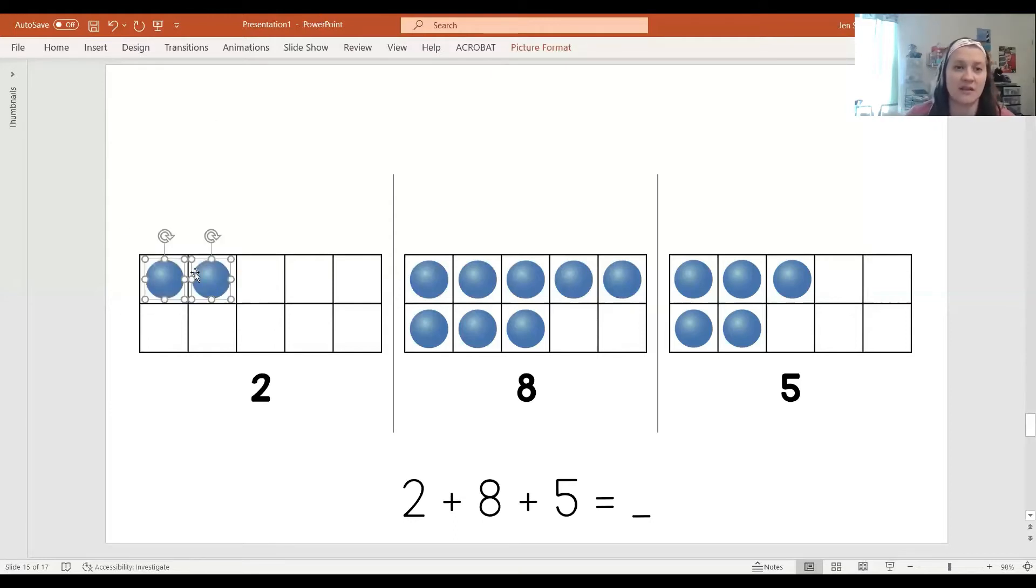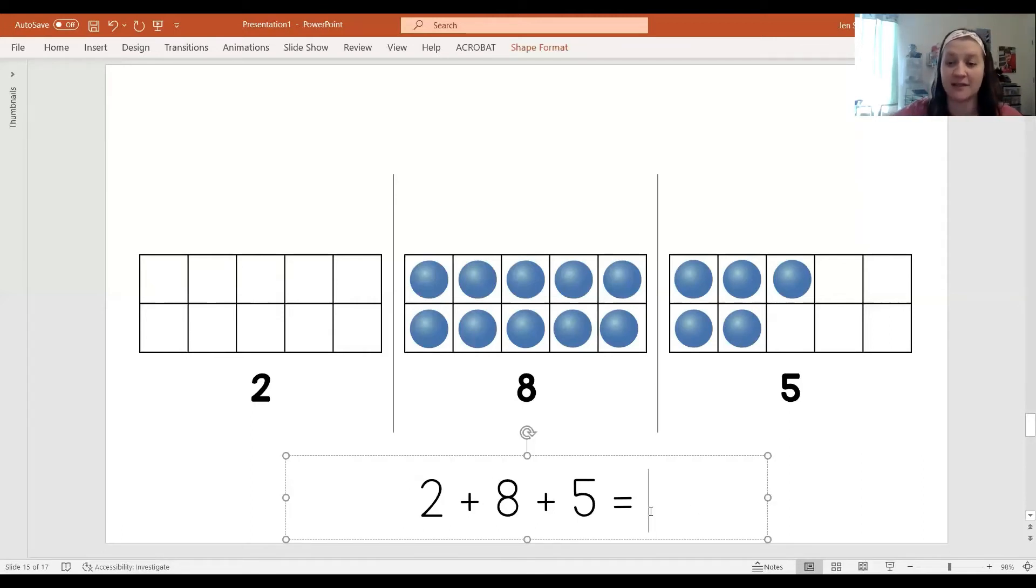I agree. I think we can take these two dots and move them right here to the eight. And now look what we have, a group of 10. Now I see 10 and five more. What's 10 and five more? You think it's 15? Let's count to double check. 10, 11, 12, 13, 14, 15. Great job. So 2 plus 8 plus 5 equals 15.